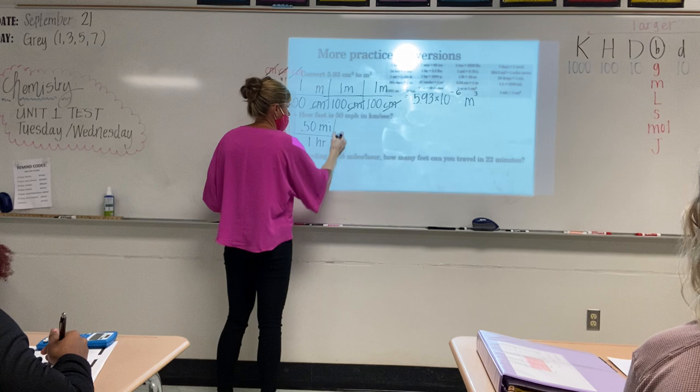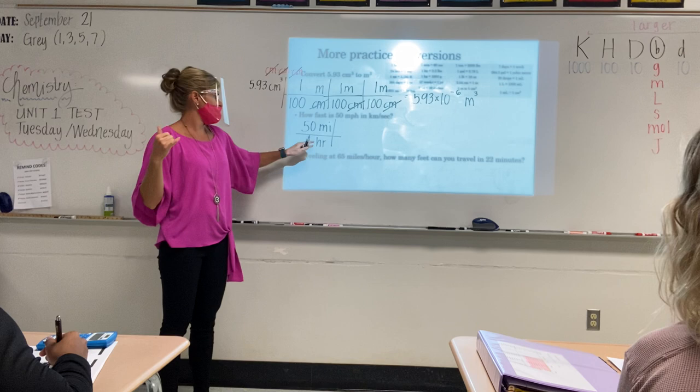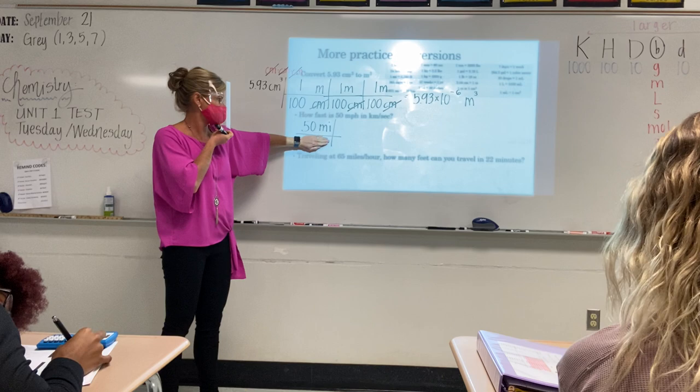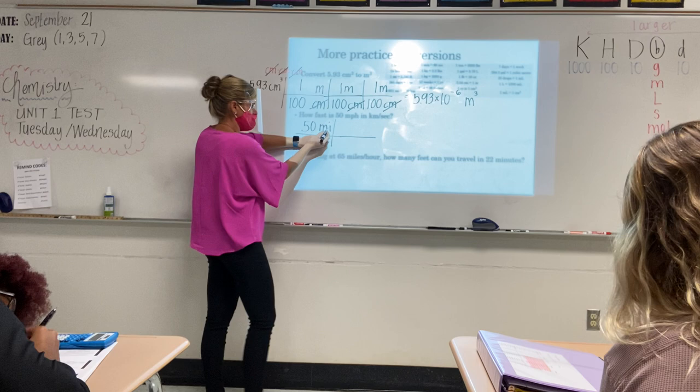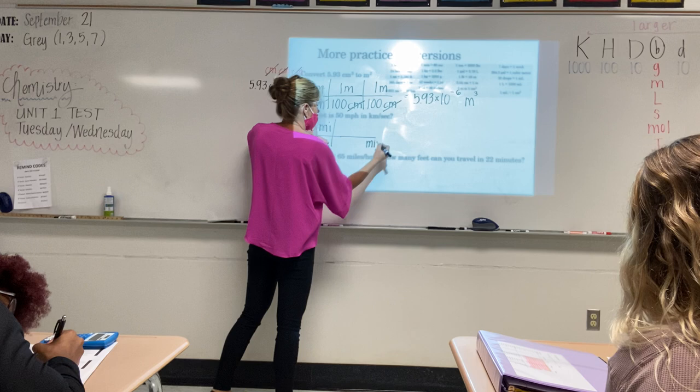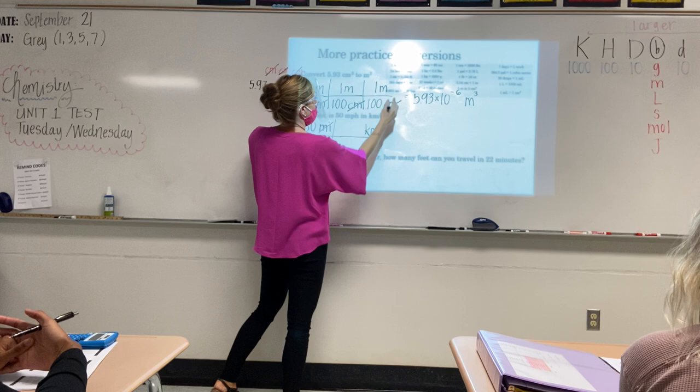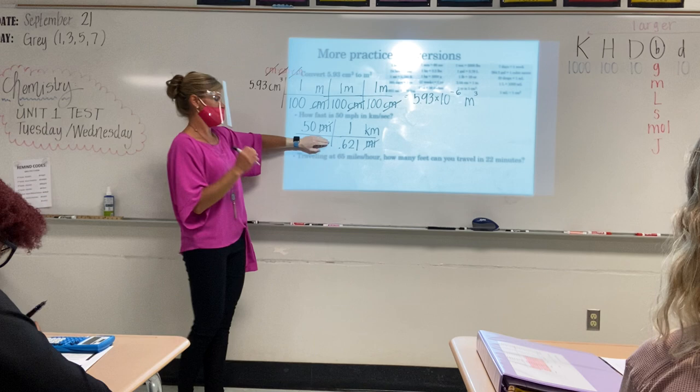Anytime you're reading a problem and it says 'per' or 'in' or any other words that mean divided by or a rate, make sure that second part goes on the bottom. Now we've got to change two things: miles to kilometers and hours to seconds. Forget about the hours for now — just do the miles first like we've already done. Miles is on top, where's miles going to go next? On the bottom. What am I going to put on top? Kilometers. Miles canceled. I think that says 0.621 miles is equal to one kilometer.